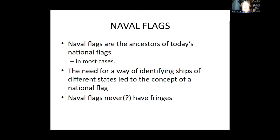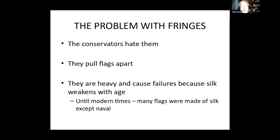Let's start off with naval flags. Naval flags are the ancestors of today's national flags in most cases. There was a need for a way of identifying ships of different states in the Middle Ages, and probably even back into ancient times, and it led to the concept of a national flag. Naval flags do not have fringes. Why? Because on a windy day, a fringe sewn to a flag will rip it to shreds. They're heavy, they cause failures because the fabric weakens with age and fringes tear them apart. So we don't see fringes with naval flags, which become national flags.